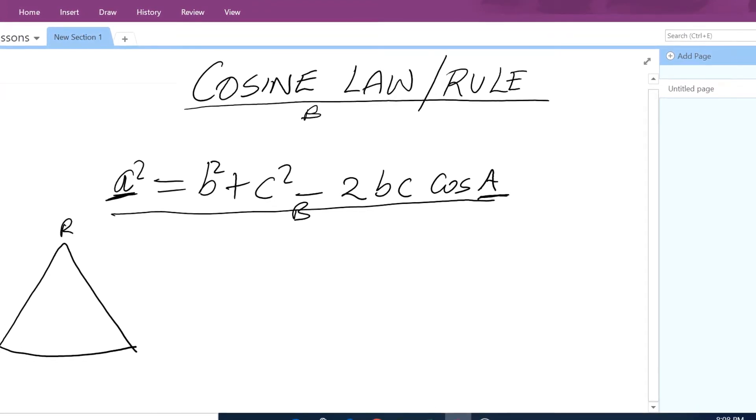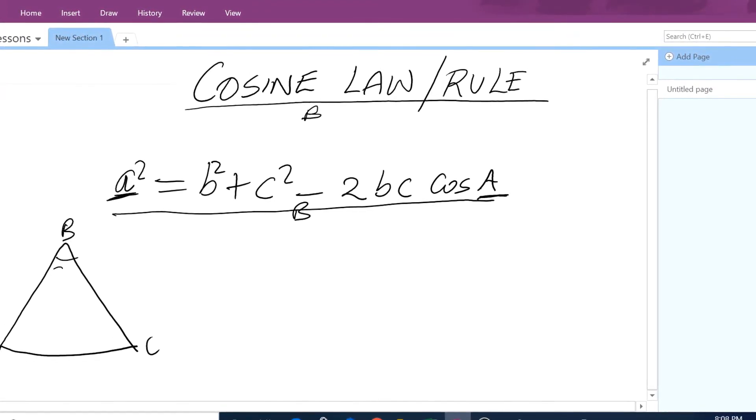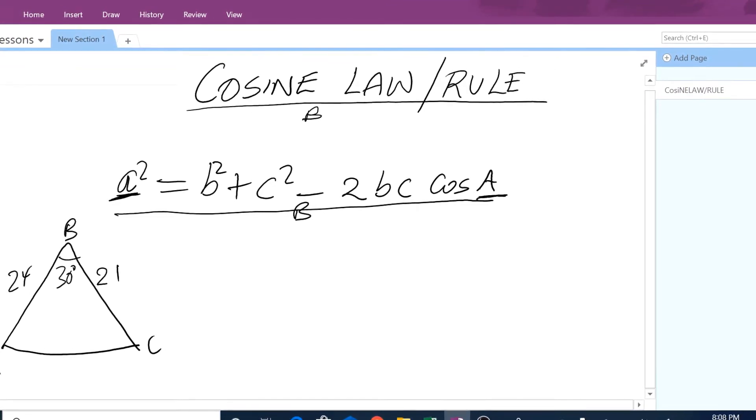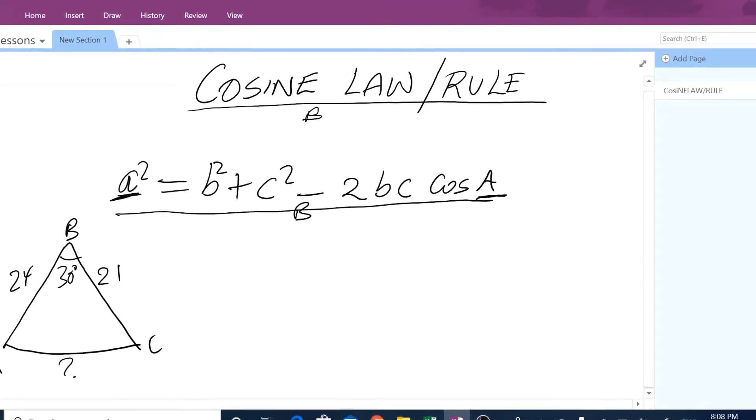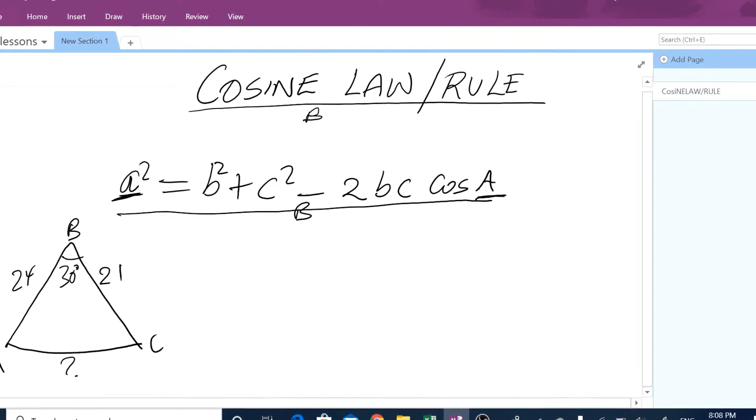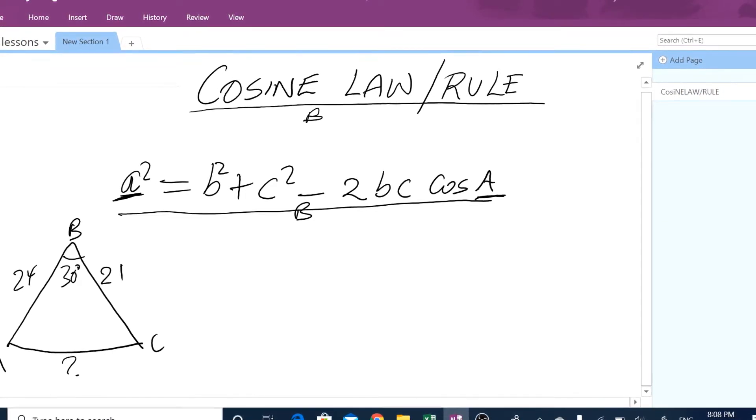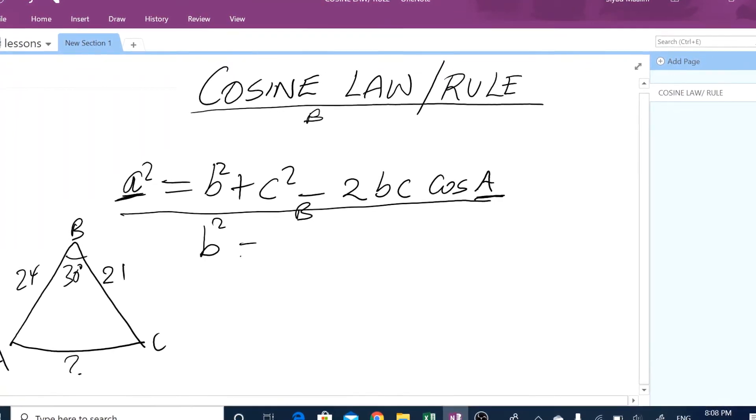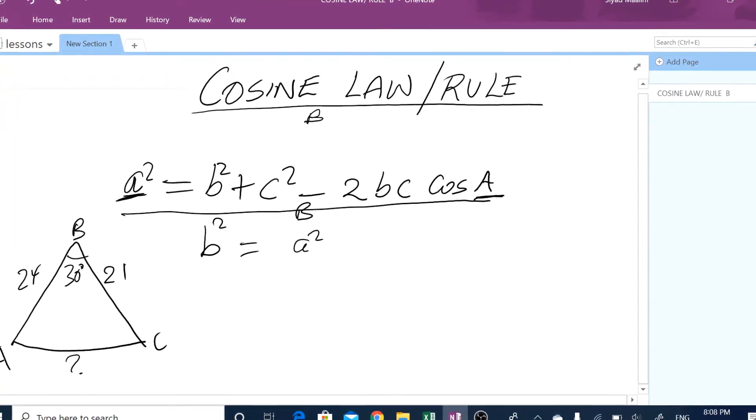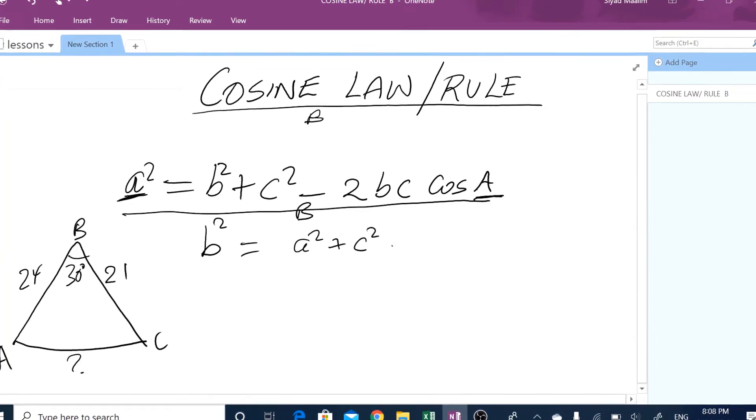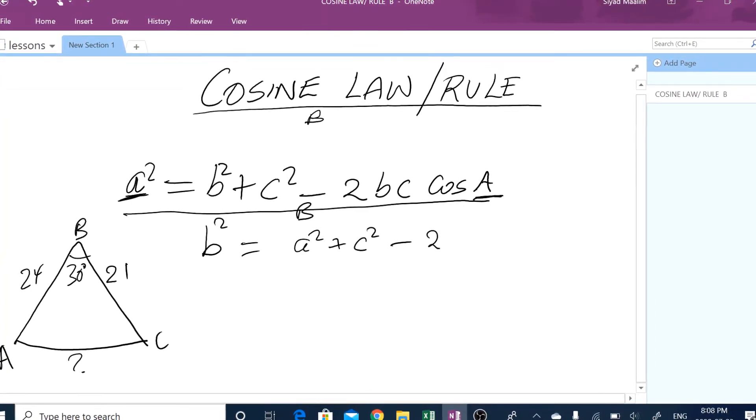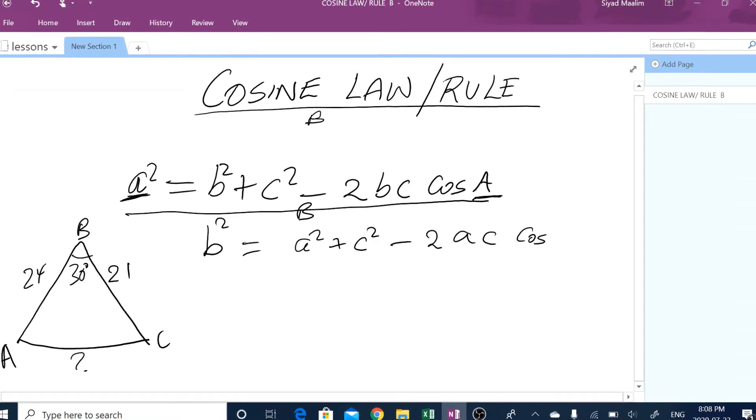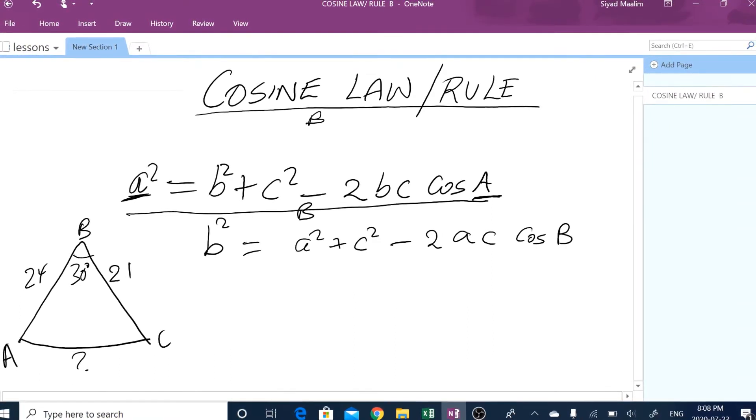A, B, C, where the angle in between was 30 degrees. This was 21, and that was 24. And we want to find side b. Because we want to find side b, we can use the formula for side b. And that is, b squared equals a squared plus c squared minus 2 times a and c, cos B.